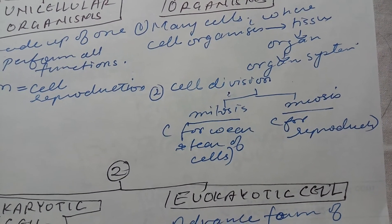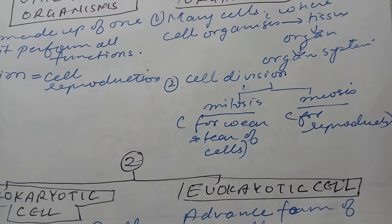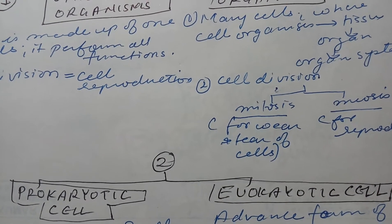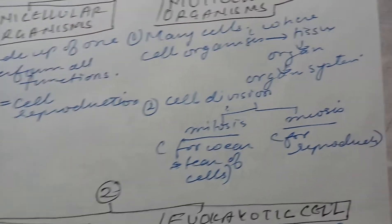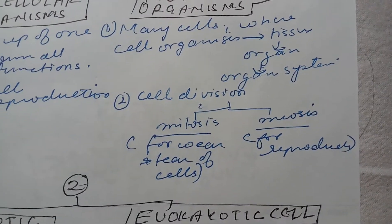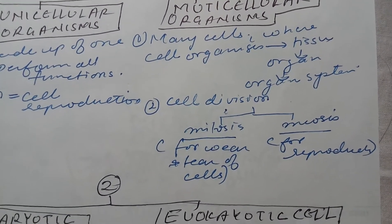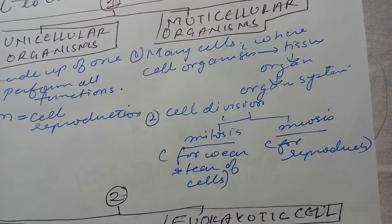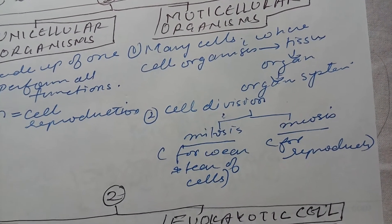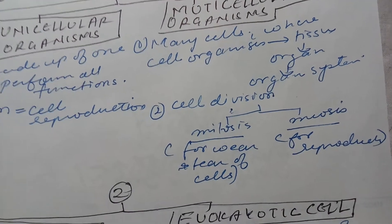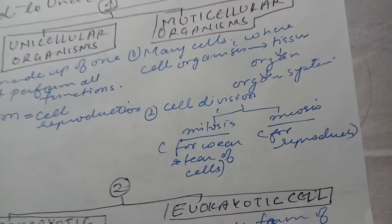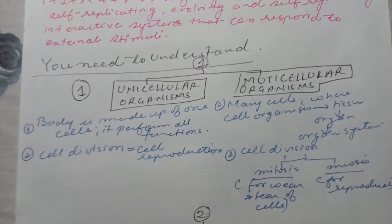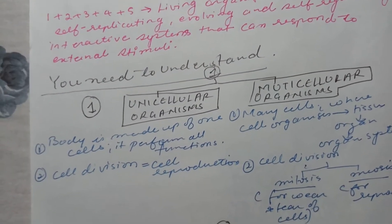In multicellular organisms, cell division may occur for wear and tear of the cell or for reproduction. The cells of multicellular organisms are divided into two types: somatic cells and reproductive cells. Reproductive cells divide to produce gametes. Somatic cells divide by mitosis and are responsible for growth and wear and tear.